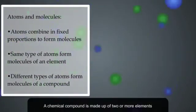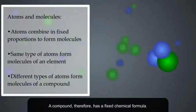Derivation of Chemical Formula. A chemical compound is made up of two or more elements combined in a fixed proportion. A compound therefore has a fixed chemical formula.